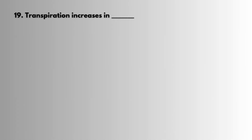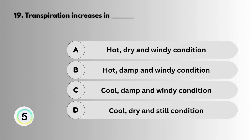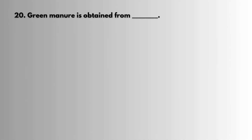Question 19: Transpiration increases in dash. Question 20: Answer: Green manure.